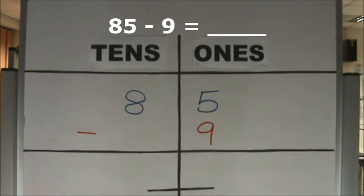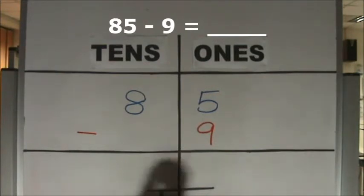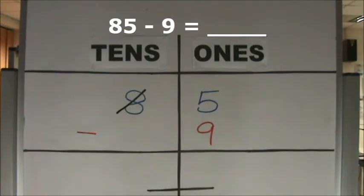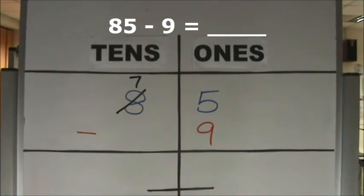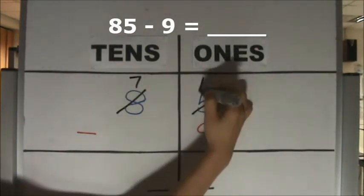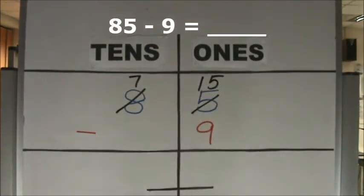We need to regroup 1 ten for 10 ones. We regroup 1 ten for 10 ones. How many tens do we have left? We have 7 tens left. How many ones do we have now? 10 and 5 make 15. We have 15 ones now.